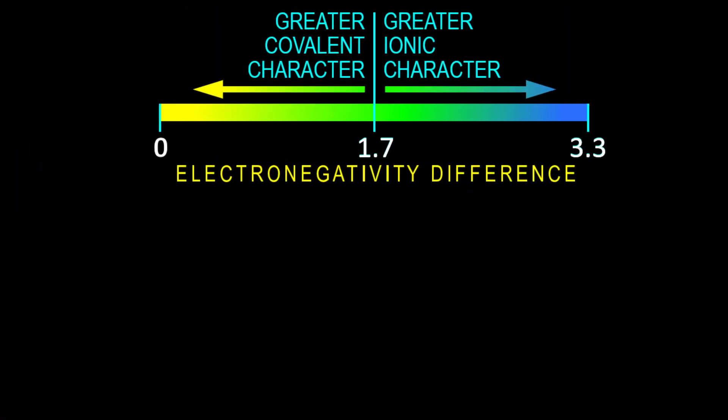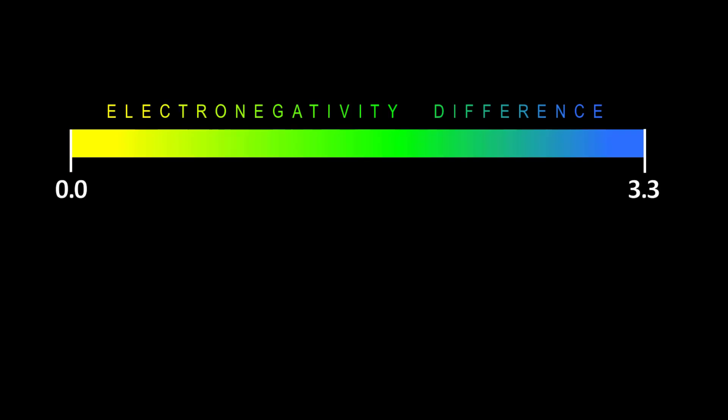It is a continuum of bond character changing from covalent at one end to ionic at the other. We will look at all that in detail starting now. The divisions on the continuum are generally from 0 to 0.4 being nonpolar covalent, meaning the electron sharing is equal between atoms.